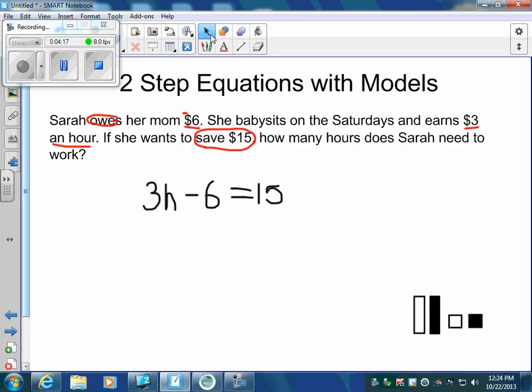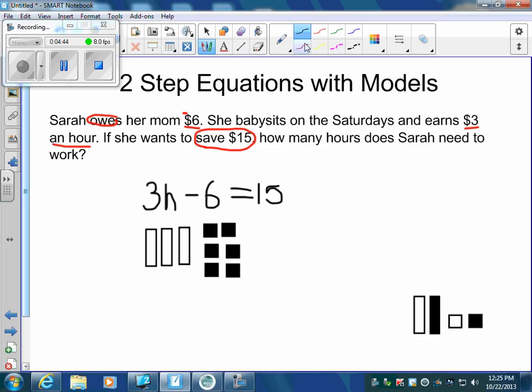H is just like an x. So I'm going to have 3 of those. I have a minus 6, so it's going to be negative 6 tiles. And all of that is going to equal my 15 tiles.